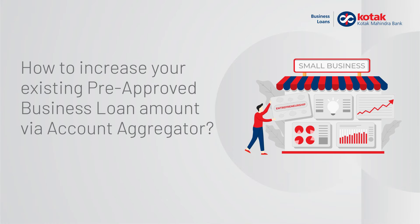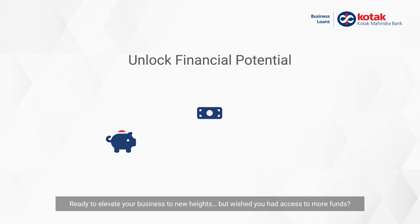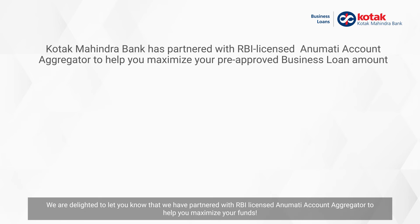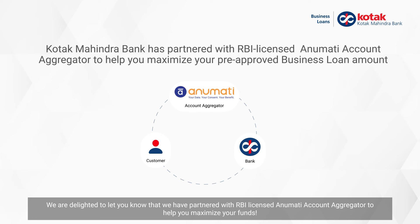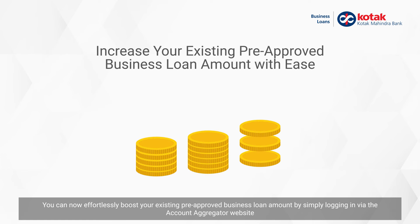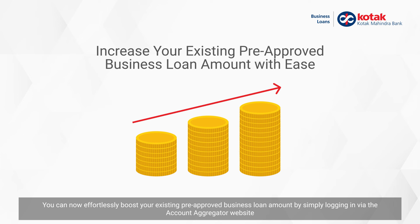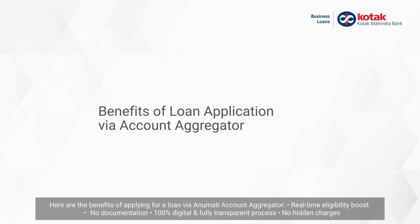How to Increase Your Existing Pre-Approved Business Loan Amount via Account Aggregator. Ready to elevate your business to new heights but wish you had access to more funds? We are delighted to let you know that we have partnered with RBI Licensed Anumati Account Aggregator to help you maximize your funds. You can now effortlessly boost your existing pre-approved business loan amount by simply logging in via the Account Aggregator website. Here are the benefits of applying for a loan via Anumati Account Aggregator.